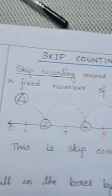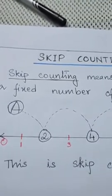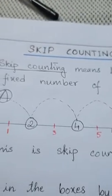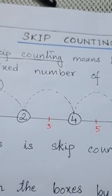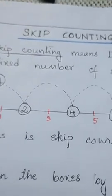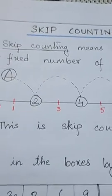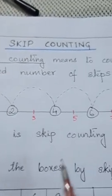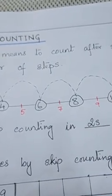Since you can count 2 numbers, same way you can skip count in 3s, in 4s, in 5s and so on. So this was your skip counting in 2s.